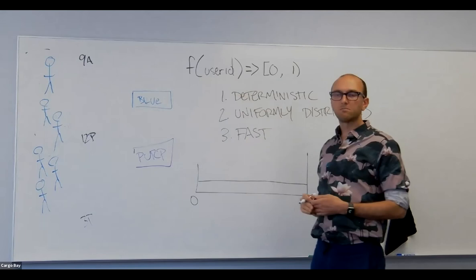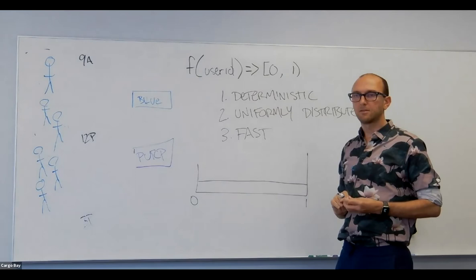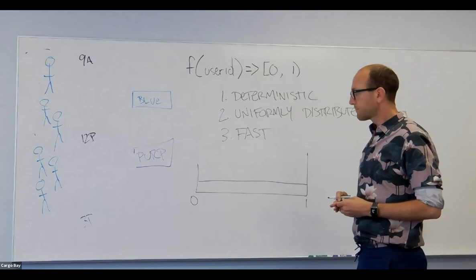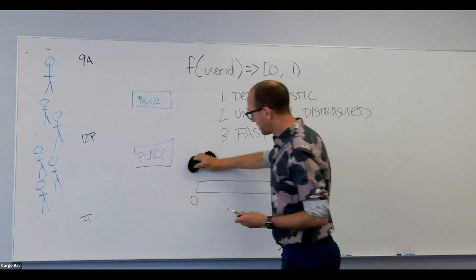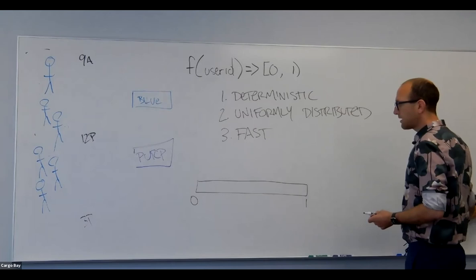Follow-up comment: each experiment would need a different function; one way to do this is to include an experiment ID as part of the input to the function. Yes — let me talk about that. I'm going to use this representation a bunch. It represents 100% of users: if you land on 0.5 or less you get blue, if 0.5 or greater you get purple.